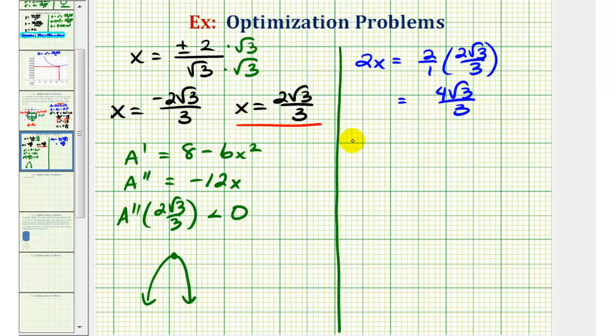And then 4 minus x squared would be equal to 4 minus 2 square root 3 over 3 squared. So we'd have 4 minus, and then 2 square root 3 squared, that would be 4 times 3 or 12. 3 squared is 9. So this is 12 ninths or 4 thirds. And then 4 is the same as 12 thirds. 12 thirds minus 4 thirds is 8 thirds.